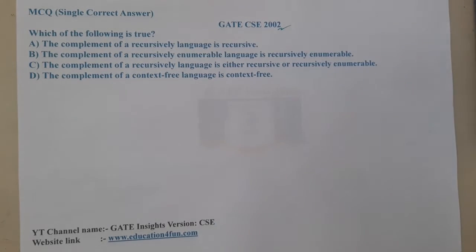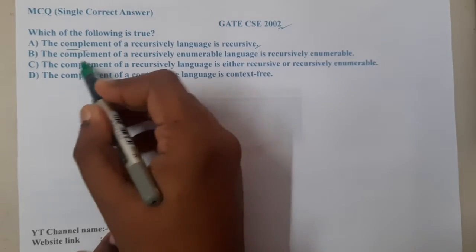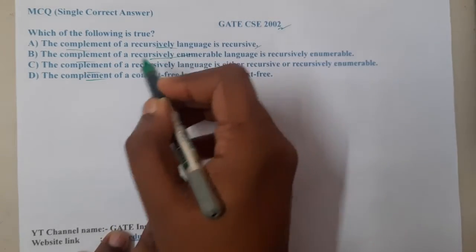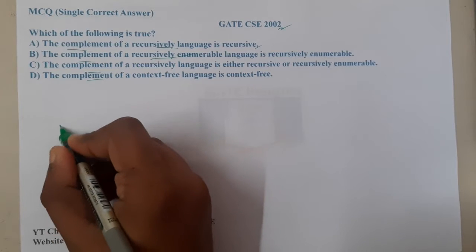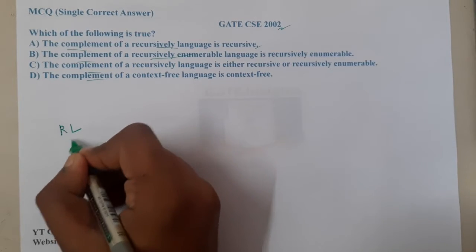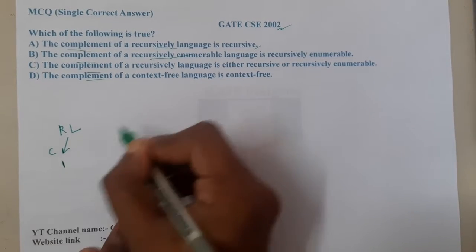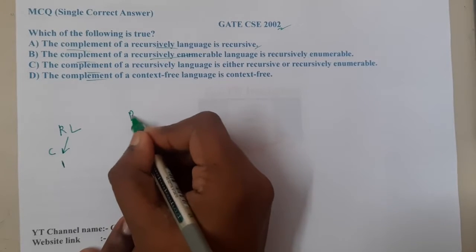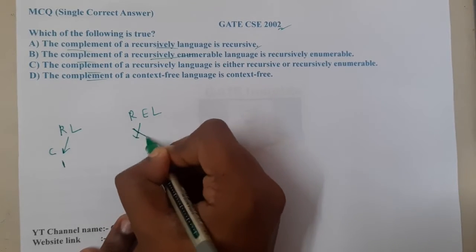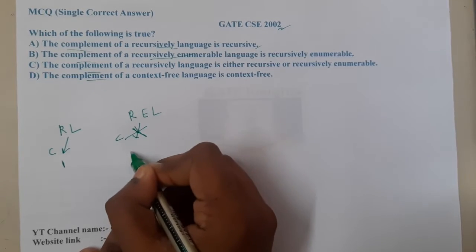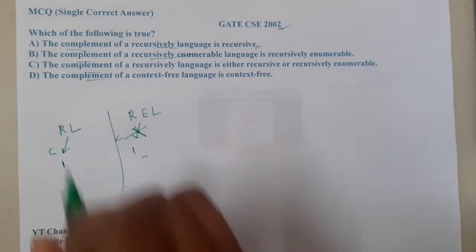The options are talking about complements of recursive and recursively enumerable languages. When we talk about recursive language, it is closed under complement. When we talk about recursively enumerable language, it is not closed under complement.